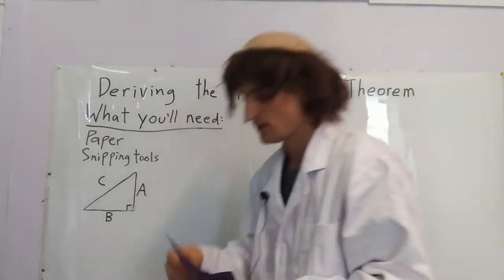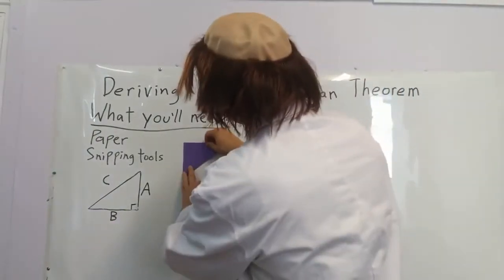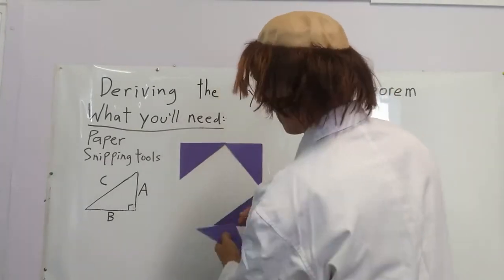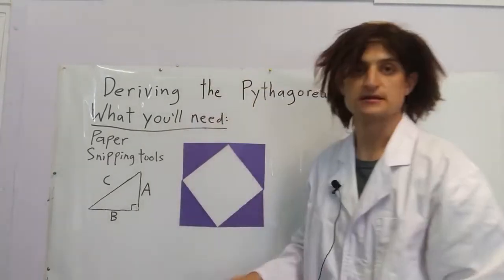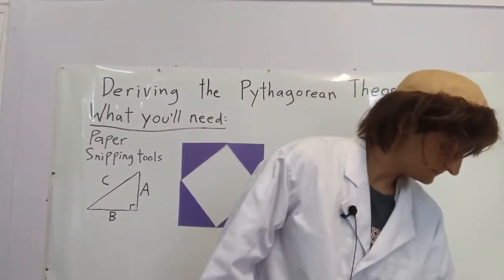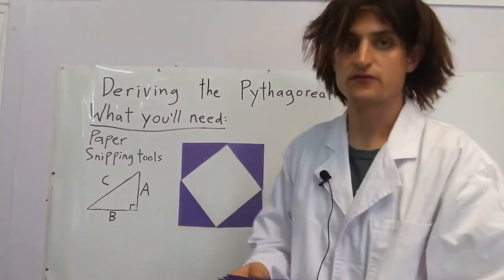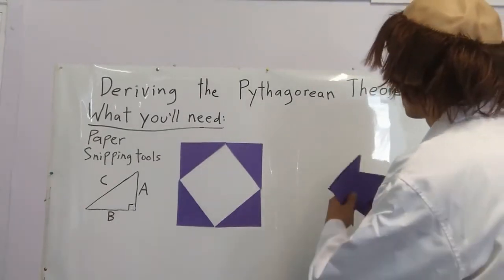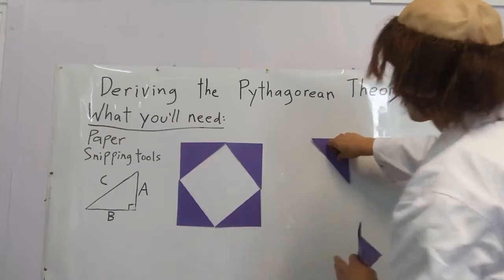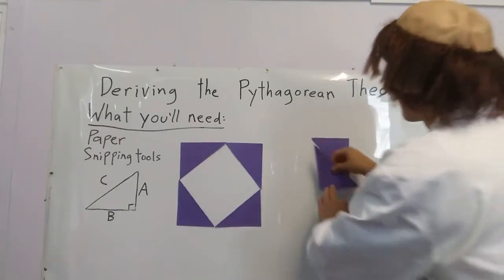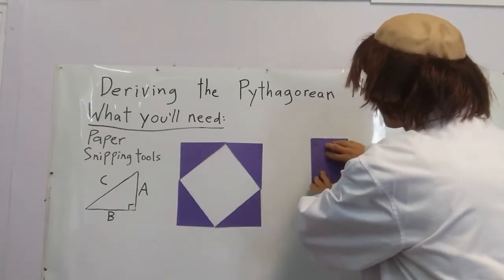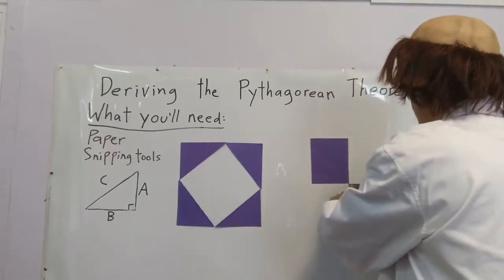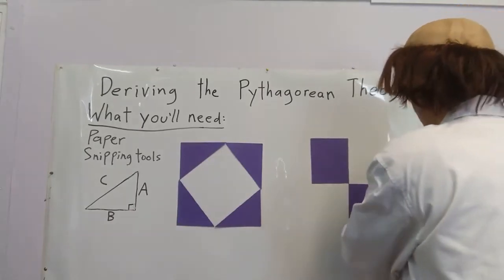Once we have our eight, we'll make them into a square like this. This is our first four triangles. Now for the next four triangles we arrange them slightly differently — the first two, and then for the next two we'll put them like that.